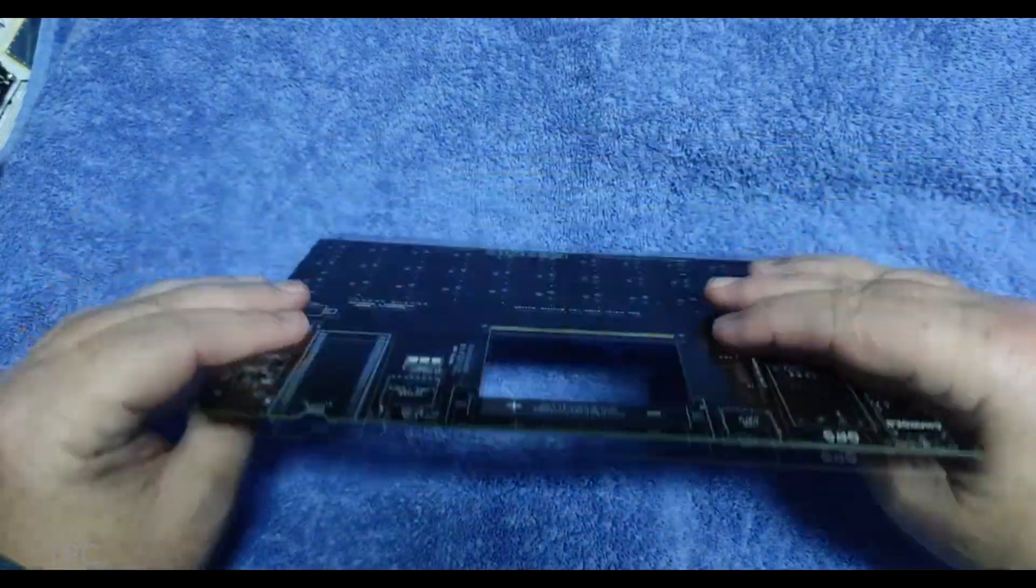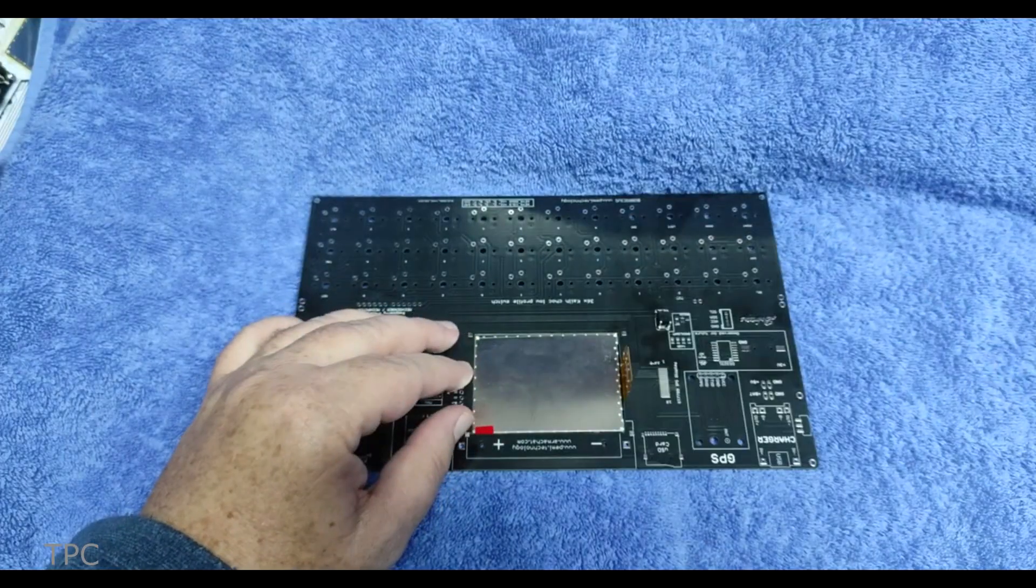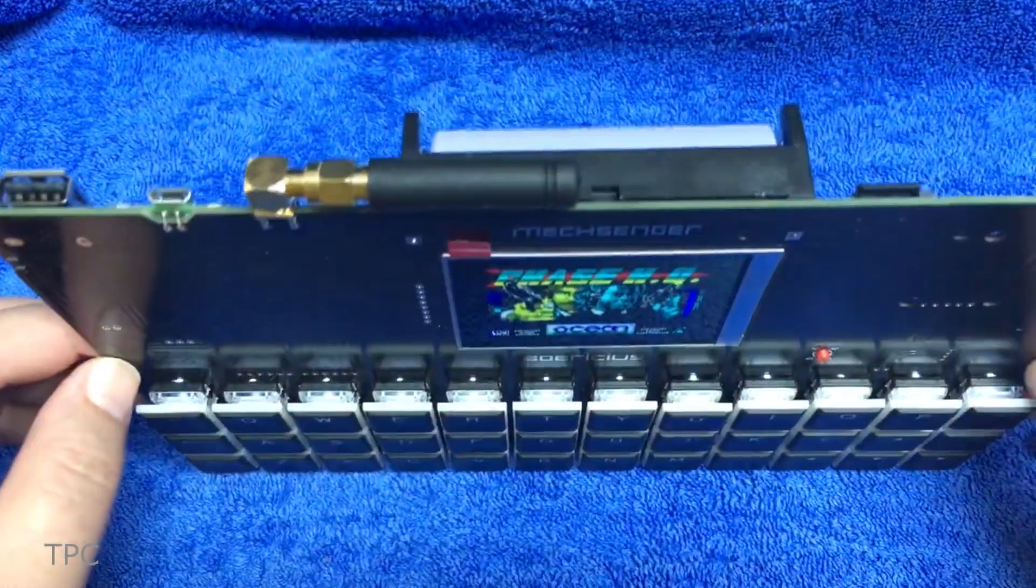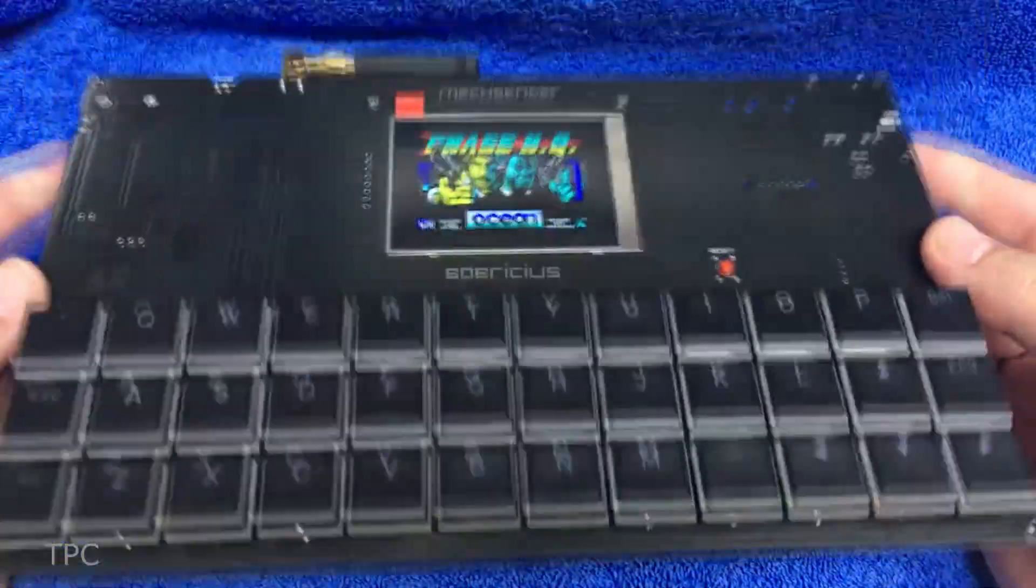To place the screen, he made a cutout in the PCB and protected it with a cover board. This solved two things for him. First, it kept the display firmly in its position, and second, it reduced the overall thickness of the project.